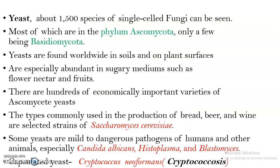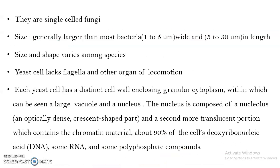Coming to the detailed structure: about 1500 species of yeast can be seen. They are mainly belonging to the phylum Ascomycota; some are seen in Basidiomycota also. They are worldwide in distribution, seen in soil, plant surfaces, flower nectar, fruits, etc. Economically important examples include Saccharomyces cerevisiae, used in baking and brewing industries. Some pathogenic yeasts can also be seen — examples are Candida albicans, Histoplasma, Blastomyces, Cryptococcus, etc.